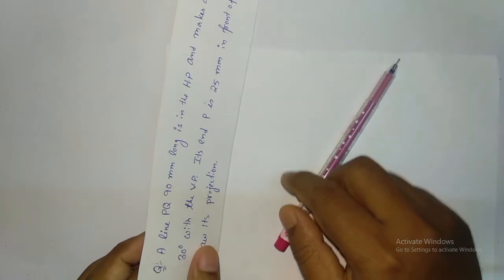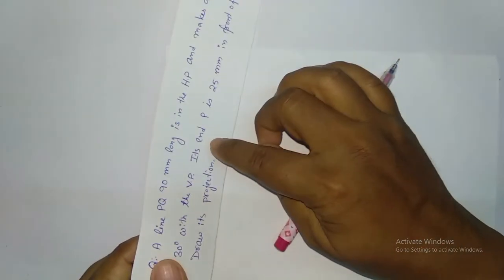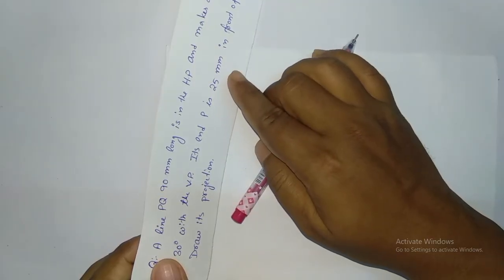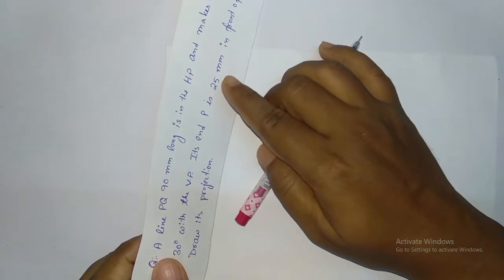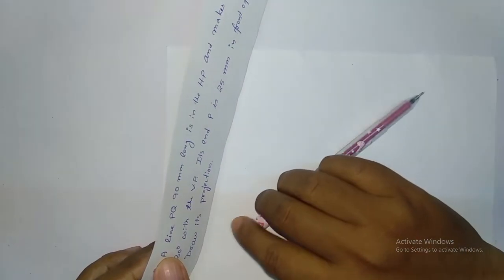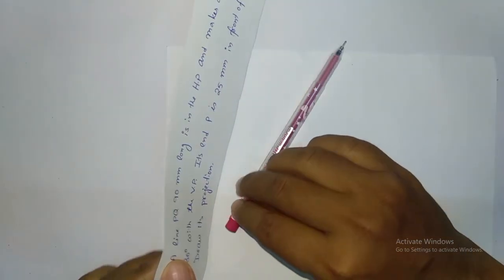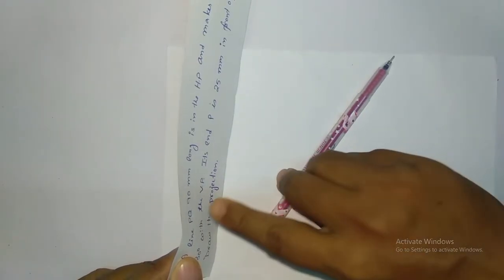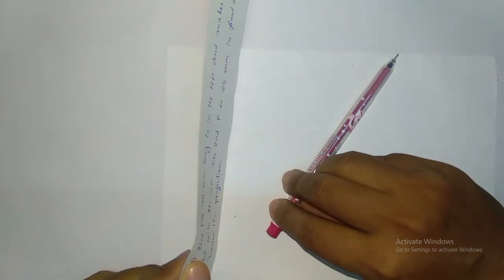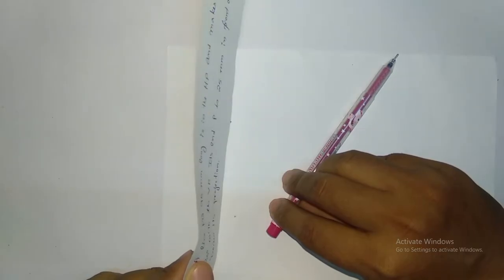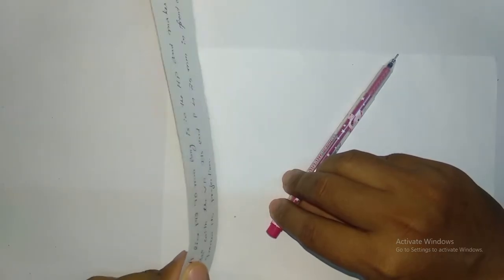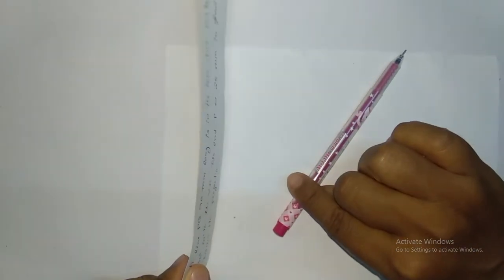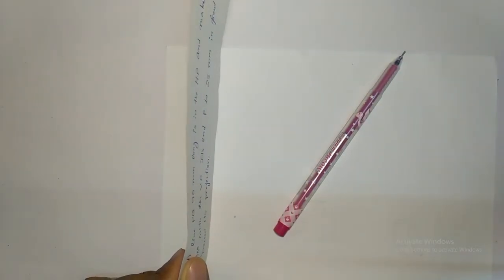It is also given that its end P is 25 mm in front of the VP. So suppose if this is the point P, this point P is 25 mm in front of the VP. Now you can draw its position — this is my VP, this is the HP. According to the problem statement, this is the status.